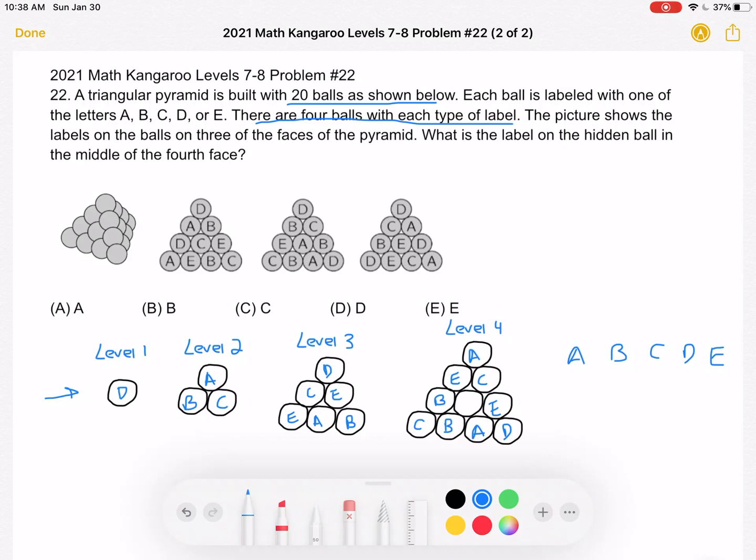And that fourth one will be that missing ball in the middle. So to start with level one, we can see from these pictures that the one at the top is D. So that's why I've drawn that right here.